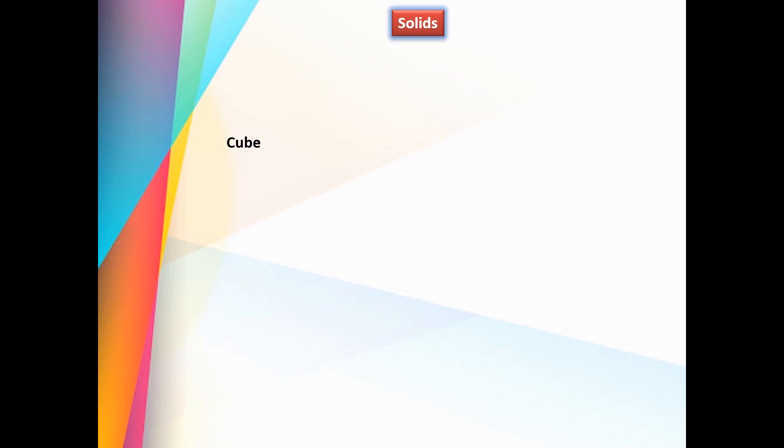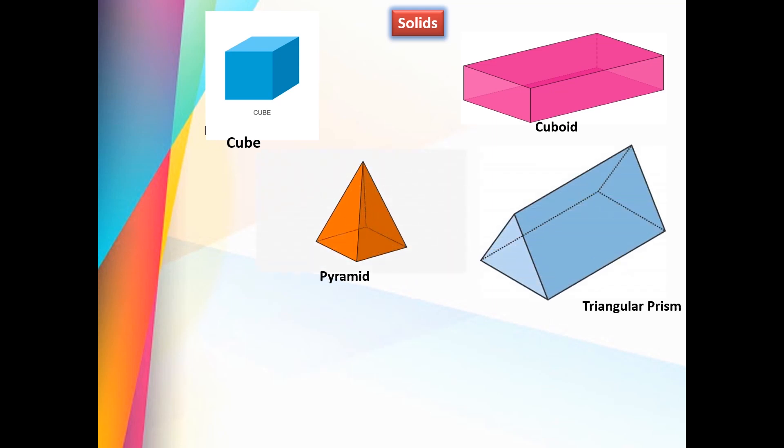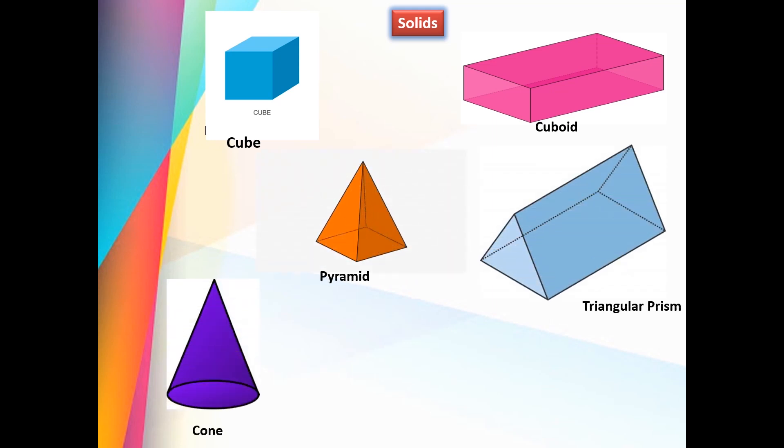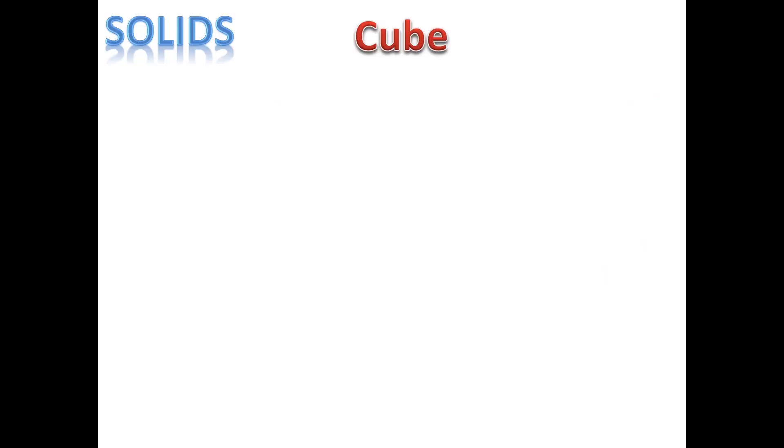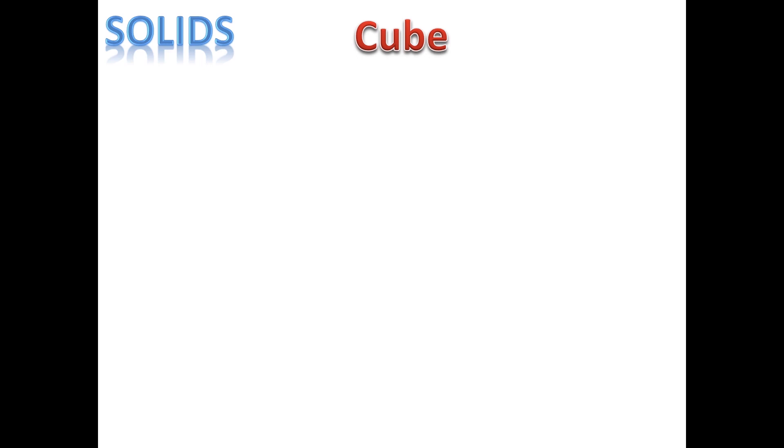Different types of solids are cube, cuboid, pyramid, triangular prism, cone, cylinder, and sphere. Let us learn in detail about these solids. Today let us learn about cube and cuboid.